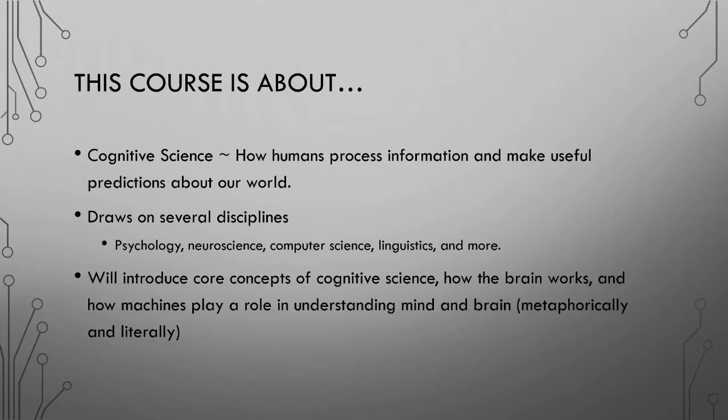In terms of course content, we'll talk a lot about cognitive science, which deals with how humans process information and make useful predictions about our world. It draws on several disciplines like psychology, neuroscience, computer science, linguistics, and more. In this class, we'll introduce some of the core concepts of cognitive science, how the brain works, and how machines play a role in understanding the mind and brain, both metaphorically and literally.